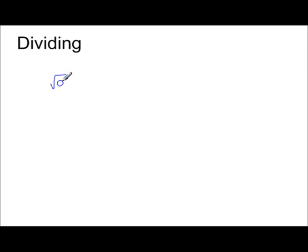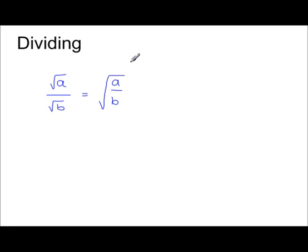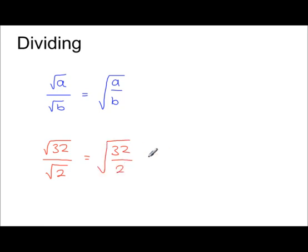Dividing surds. The square root of a divided by the square root of b can be combined as a single fraction: root(a/b). You can go from left to right or right to left depending on what you need. For instance, root 32 divided by root 2 can be written as root(32/2) = root 16 = 4.